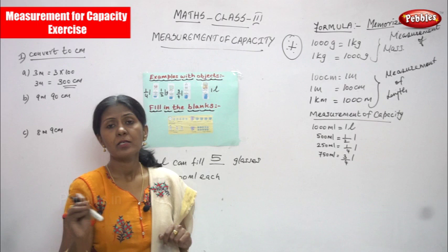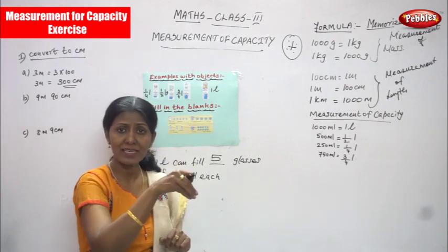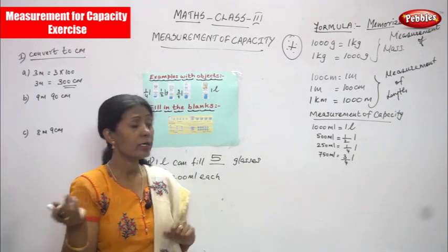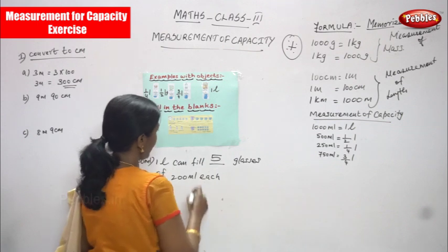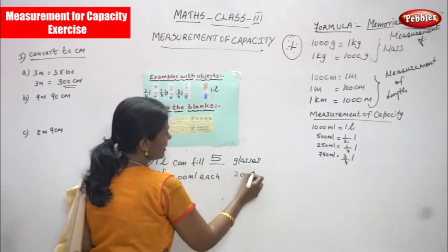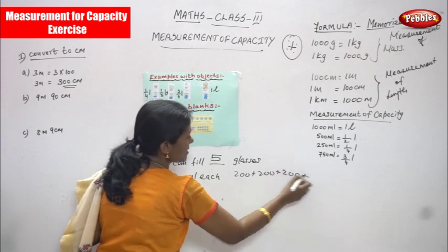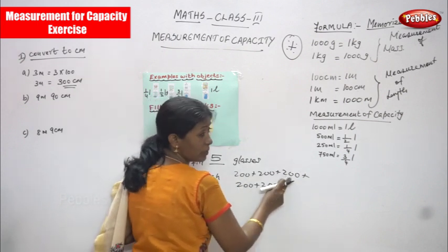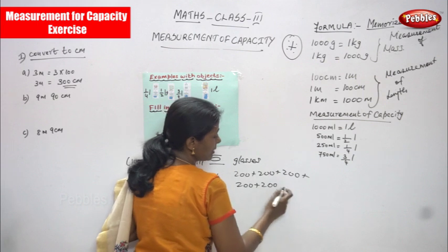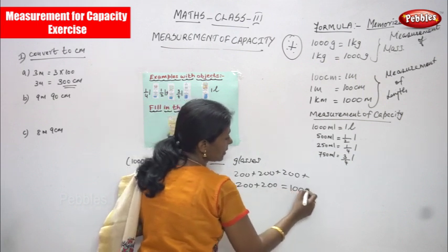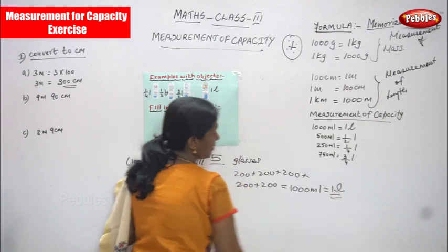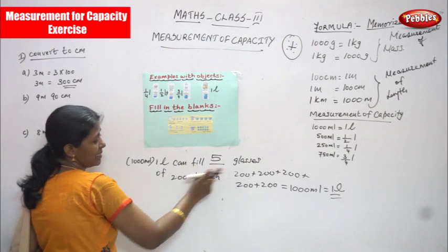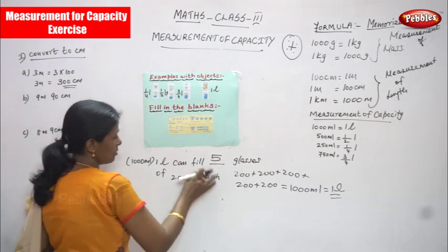So 5 glasses are there. Each glass has 200 ml of milk filled. How many glasses totally? 5 glasses. So you can add or else you can multiply. Adding is simple: 200+200+200+200+200 = 1000 ml or else 1 liter. That is the answer. So 1000 ml is nothing but 1 liter — 1 liter can fill 5 glasses of 200 ml each. This is the right answer.